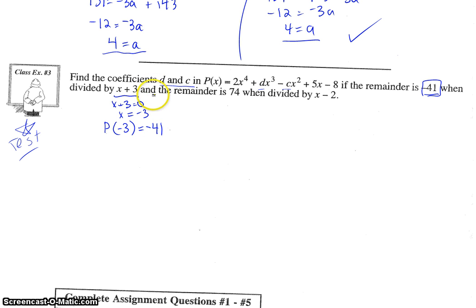Okay, keep reading. And the remainder is 74 when divided by x minus 2. More information. Let's do the same thing with that. x minus 2 equals 0. Solve for x, x would equal 2. So that means p at 2 would give you the remainder for that, 74.